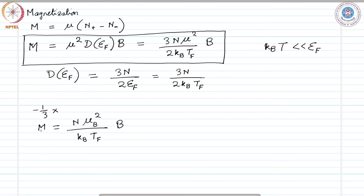Before comparing this expression with experiment, we must take into account the diamagnetism of ionic cores, the band effect, and electron-electron interaction. Taking sodium as an example, the interaction effects increase the spin susceptibility by about 75 percent — quite a large number. The magnetic susceptibility is considerably higher for most transition metals, where some inner shell is not completely filled, compared to alkali metals. The higher values suggest that the density of states is unusually high for the transition metals.